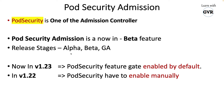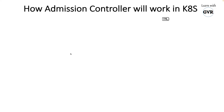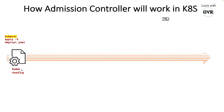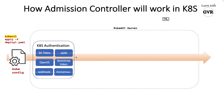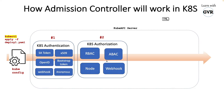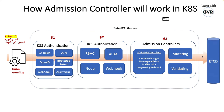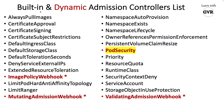Both Pod Security Policy and Pod Security Admission are admission controllers, so let's recap how admission controllers work — I've also made a separate video on that topic. When you apply a deployment, the request hits the API server, goes through authentication, then authorization, then the admission controller phase, and finally gets stored in etcd. The admission controller is triggered by the API server before storing data in etcd.